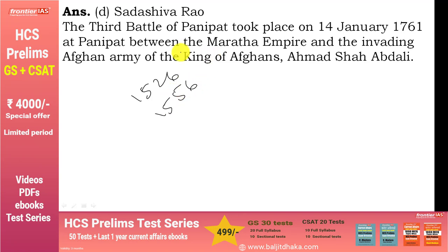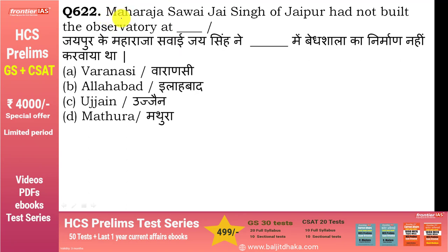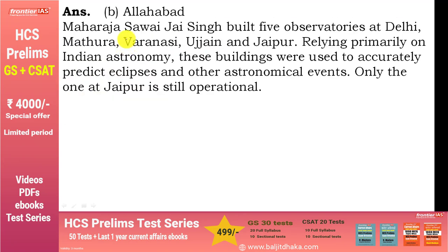Maharaja Sawai Jai Singh of Jaipur had not built the observatory at Allahabad। उन्होंने पाँच जगहों पर वेधशाला का निर्माण करवाया था: Delhi, Mathura, Jaipur, Ujjain, और Varanasi। Jaipur की observatory अभी तक operational है।